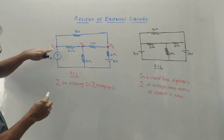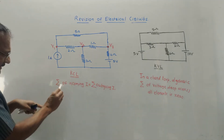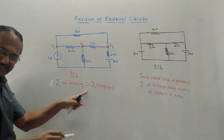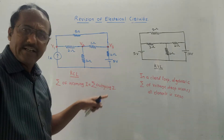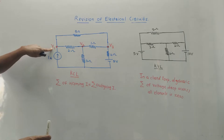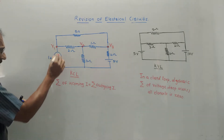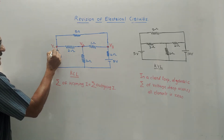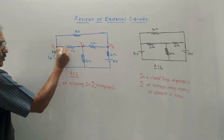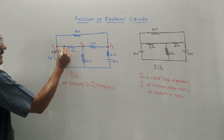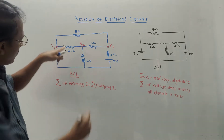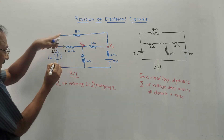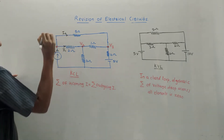The statement of KCL is: summation of incoming currents is equal to summation of outgoing currents at any node. Suppose I want to apply node analysis at node V1. This is a current source where the current is already marked in the question, so keep it as 1 ampere. Through this branch, no current is mentioned, so I will randomly assume a direction. The third branch connected to node V1 has current I2.